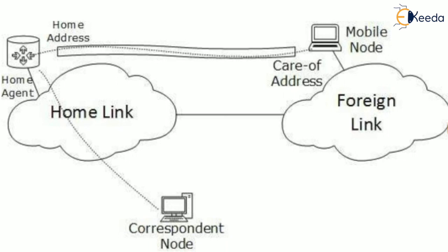Now, what will the mobile node do further? Will it use this same long route to forward messages back? No — the mobile node directly sends information to the correspondent node, and this is called route optimization. Route optimization is nothing but this mechanism where the mobile node uses the shortest route to make the connection between the correspondent node and the mobile node. In this lesson we have covered Mobile Internet Protocol Version 6 and route optimization. Thank you.